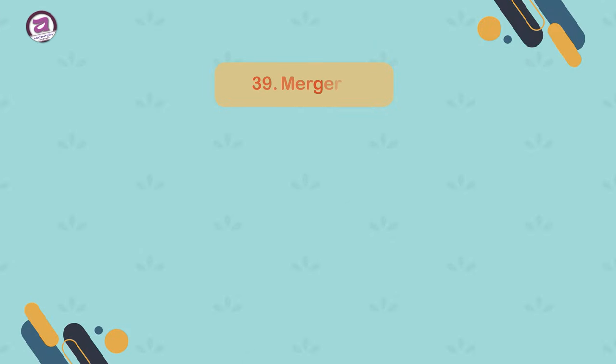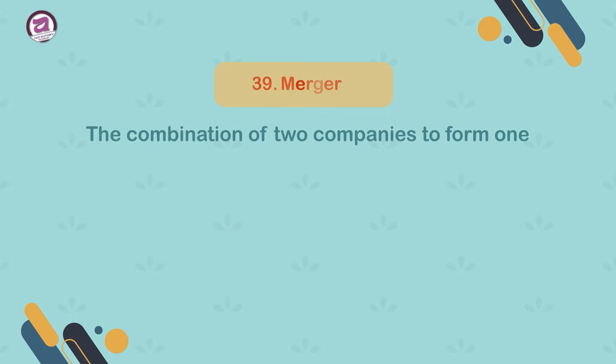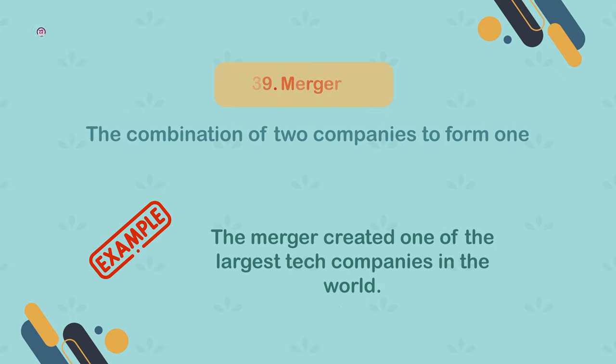39. Merger. The combination of two companies to form one. Example: the merger created one of the largest tech companies in the world.